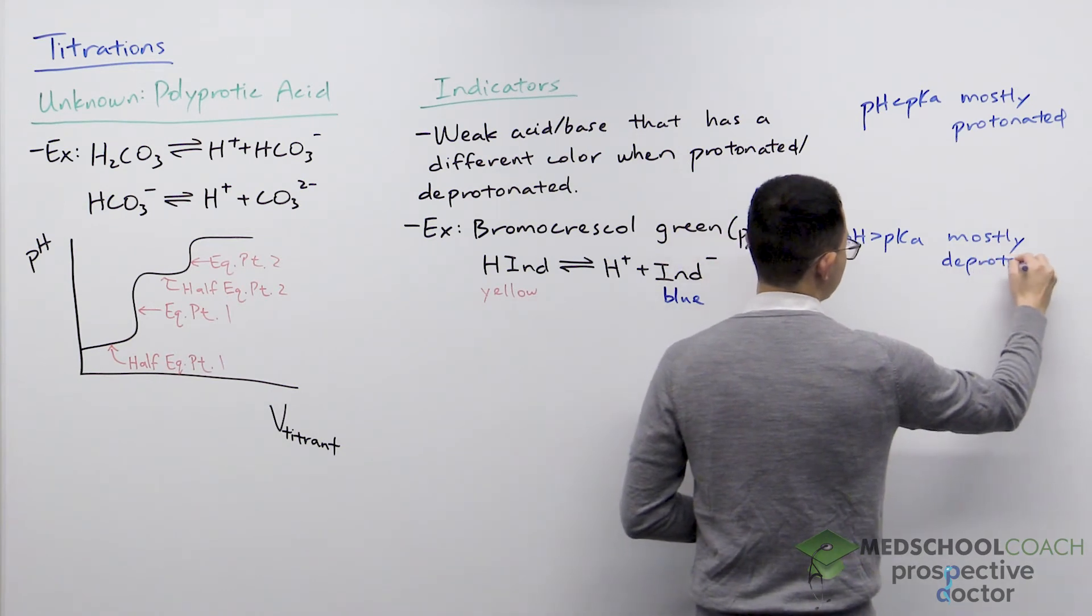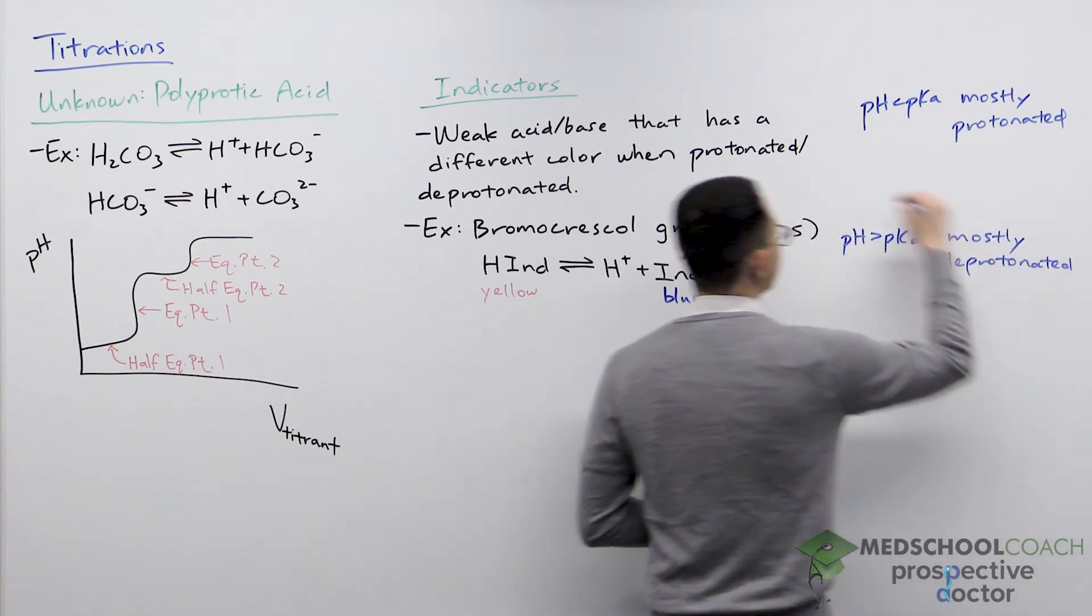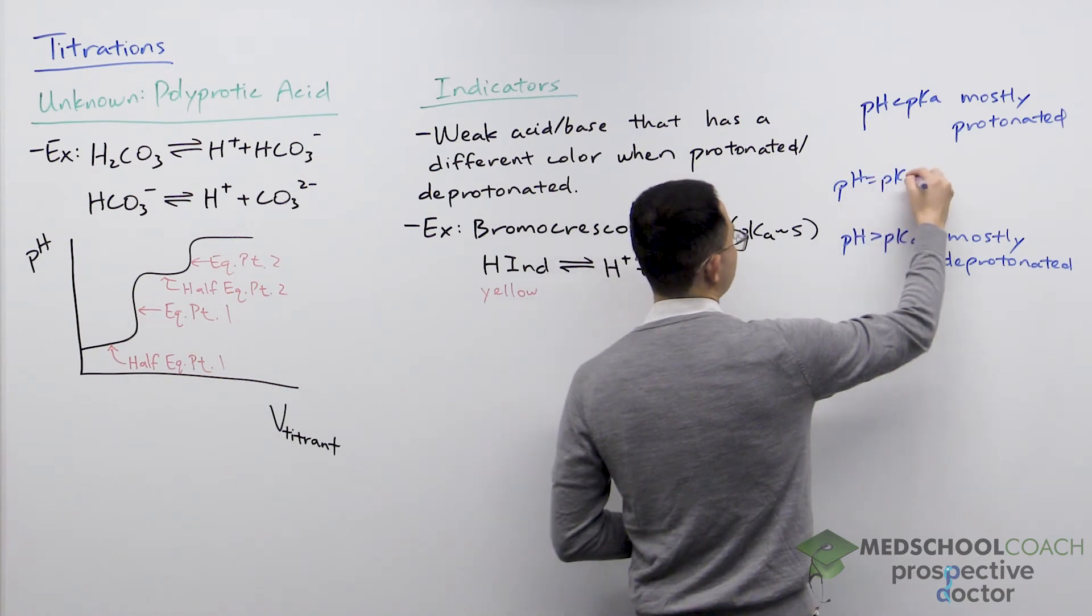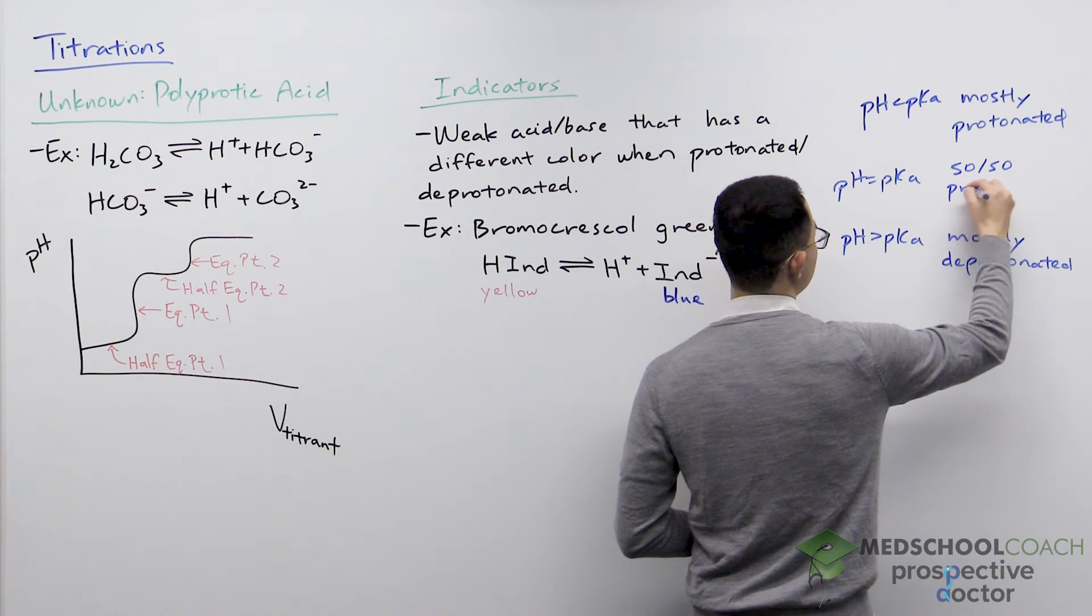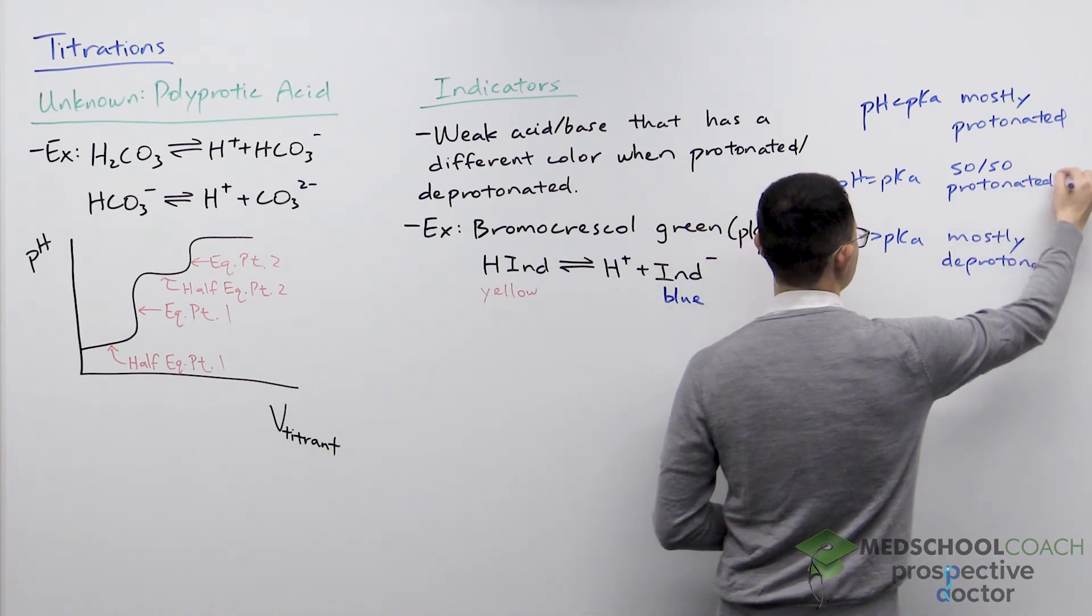And finally, if the pH is equal to the pKa, then it's 50-50. That means half of the molecules in solution are protonated and the other half are deprotonated.